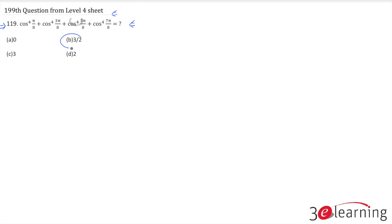The answer to this question is 3 by 2. We need to do only one thing - whenever we have different angles, we try to convert all angles into the smallest lower angle value. So we have π/8, let it be π/8. 3π/8 could be written as π/2 - π/8. This one is nothing but π/2 + π/8, and this one is nothing but π + π/8.